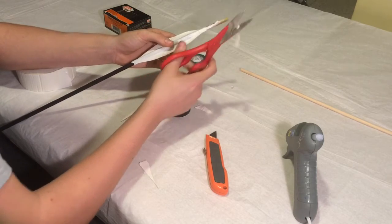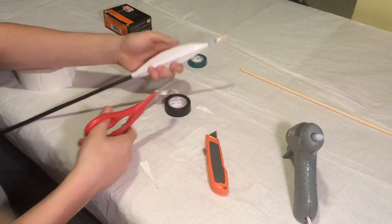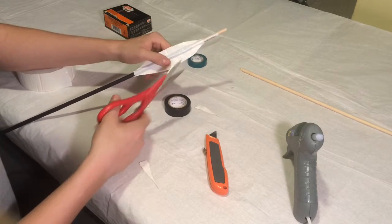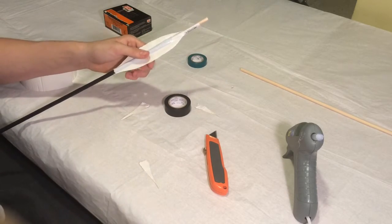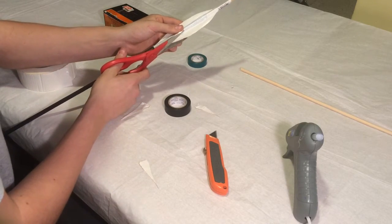I only used two fletchings for my arrow because I'm firing through a slingbow, but if you're firing through a standard bow, you should probably use three because it just stabilizes it a lot more.